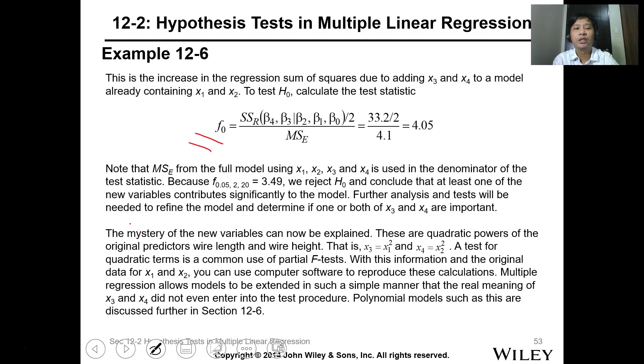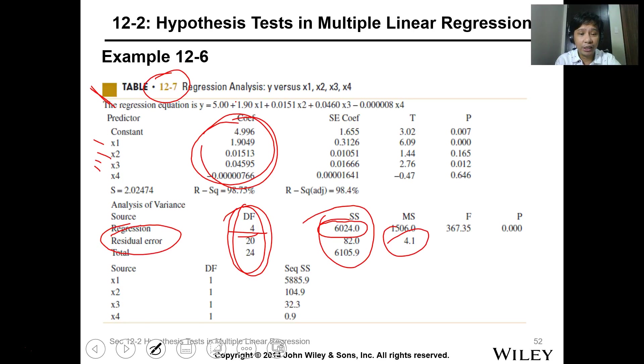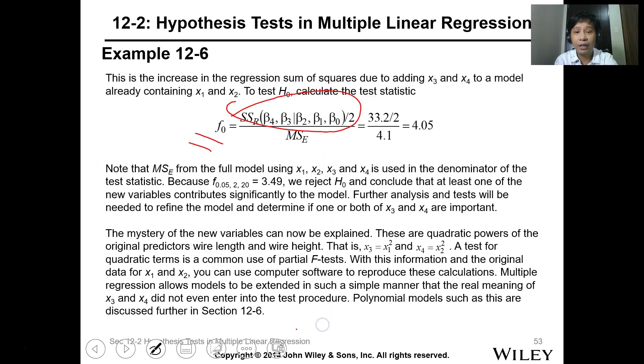So getting the F0 formula for testing: SSR over r divided by MSE. Let's get the MSE - the new one, the residual error of the four-variable model. So this is the SSR we computed earlier, 32.2 divided by 2. And from the critical value, it's 3.49, and this value is greater than, so the p-value is less than the critical 0.05.